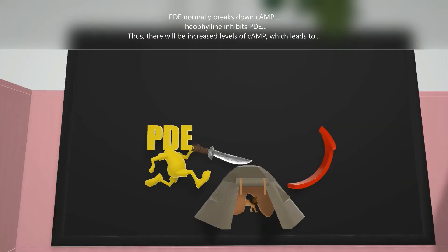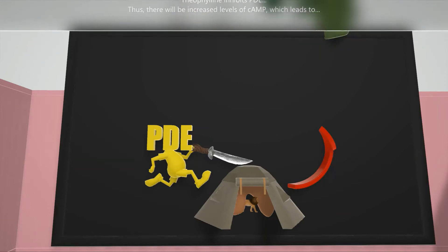And by doing so, it prevents the breakdown of cAMP. Thus, increased levels of cAMP, represented by the arrow going up, leads to...